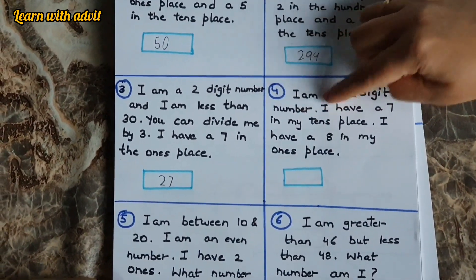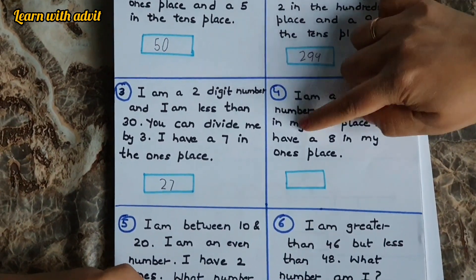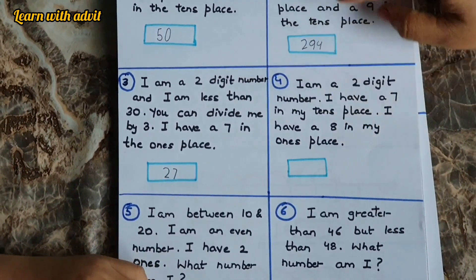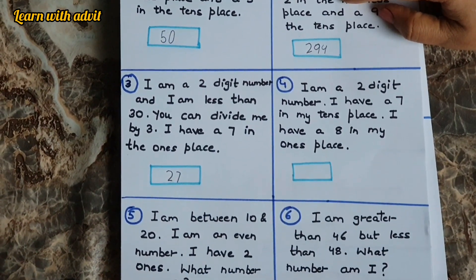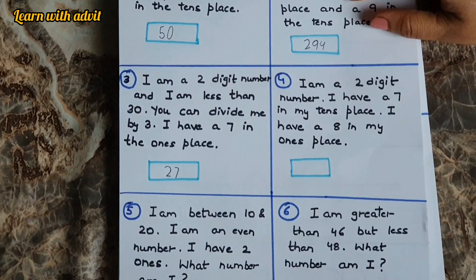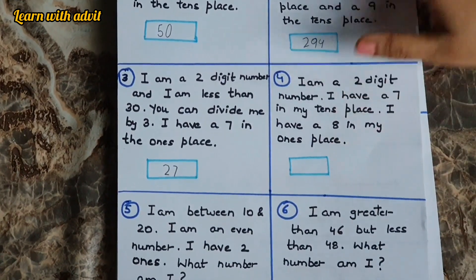I am a 2 digit number. I have 7 in my tens place and I have 8 in my ones place. Number is 78. Write it down.